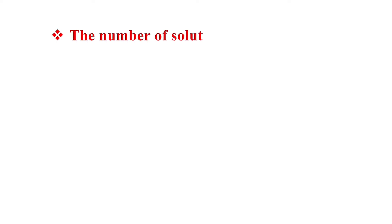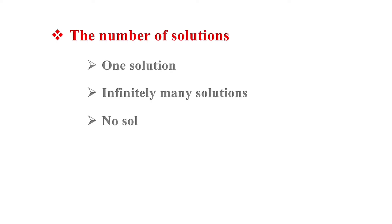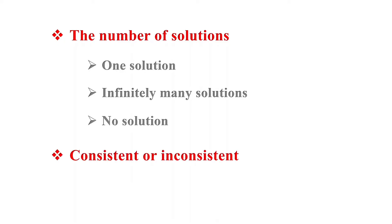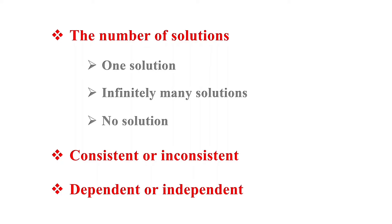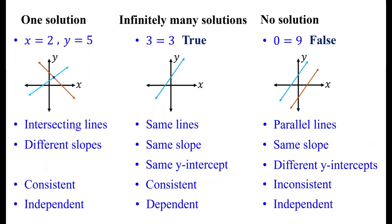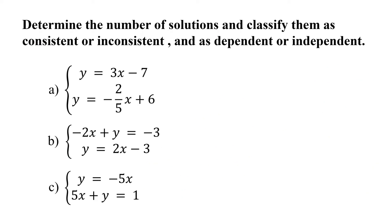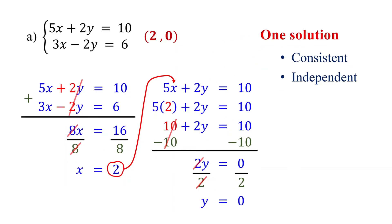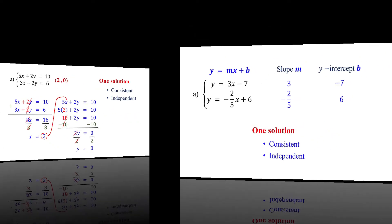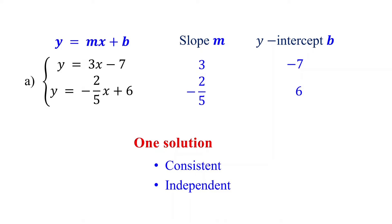In this video, we will focus on how to determine the number of solutions for systems of linear equations and classify them as consistent or inconsistent as well as dependent or independent. We will begin with a review of the key concepts and then work on some examples. I will show you two methods: the first involves solving the system of equations, while the second does not require solving.